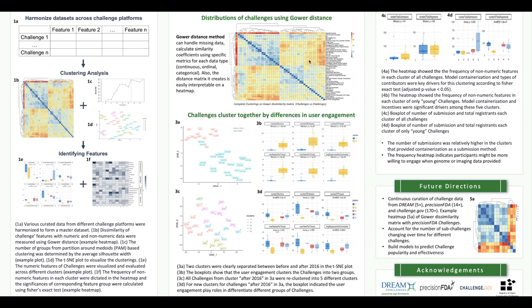The heatmap on the right shows the dissimilarity matrix of DREAM challenges using Gower distance, and we could already see 3 clusters. We further used PAM to do clustering, since it's a better fit for mixed-type datasets. In figure 3a, we visualized the clusters using PAM and a silhouette width plot by picking the highest average silhouette width. We found two clear separations based on challenge year — 'old' means challenges launched before 2016, while 'young' means after 2016. In figure 3b, the box plot indicates that user engagement data was significantly different between the two clusters.